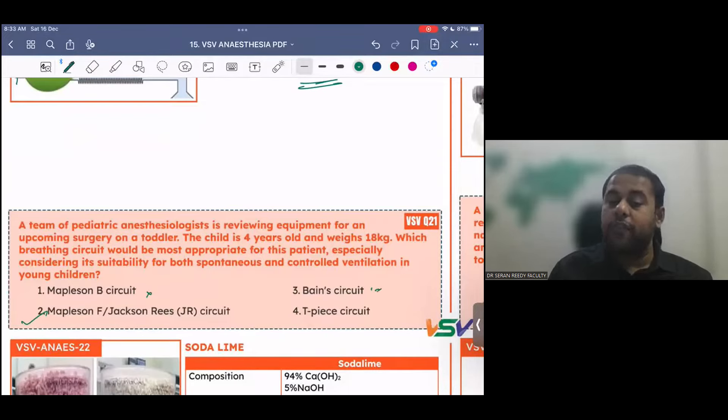Mapleson B circuit is not in use. Bain circuit in Mapleson D, it is used mainly in adults, that too for controlled ventilation. TP circuit or ISTPs, it is like nothing. When I said TPs, it is ISTPs. It is Mapleson G. It can also be used in children, but the best circuit is Mapleson F.